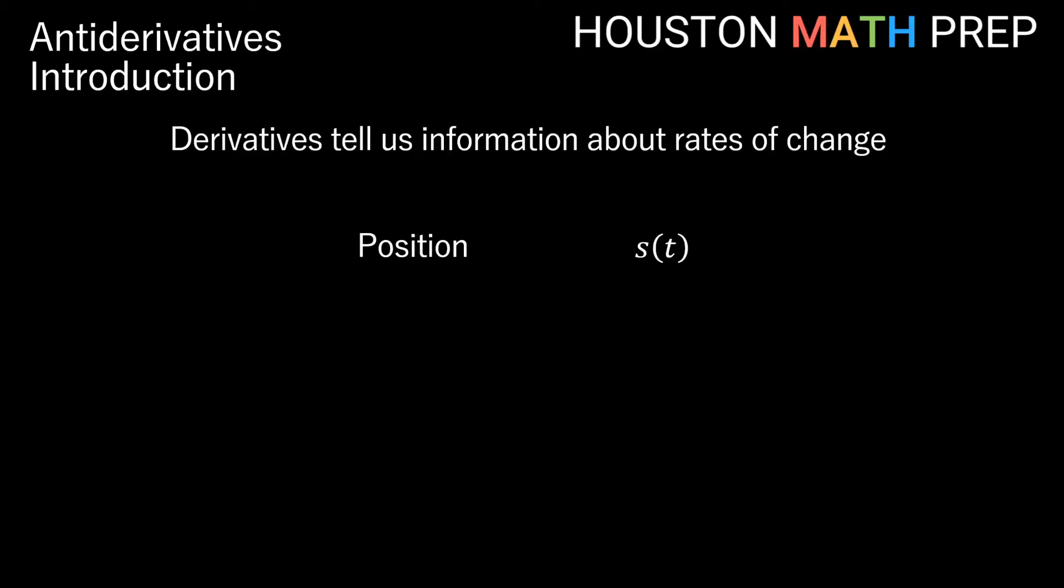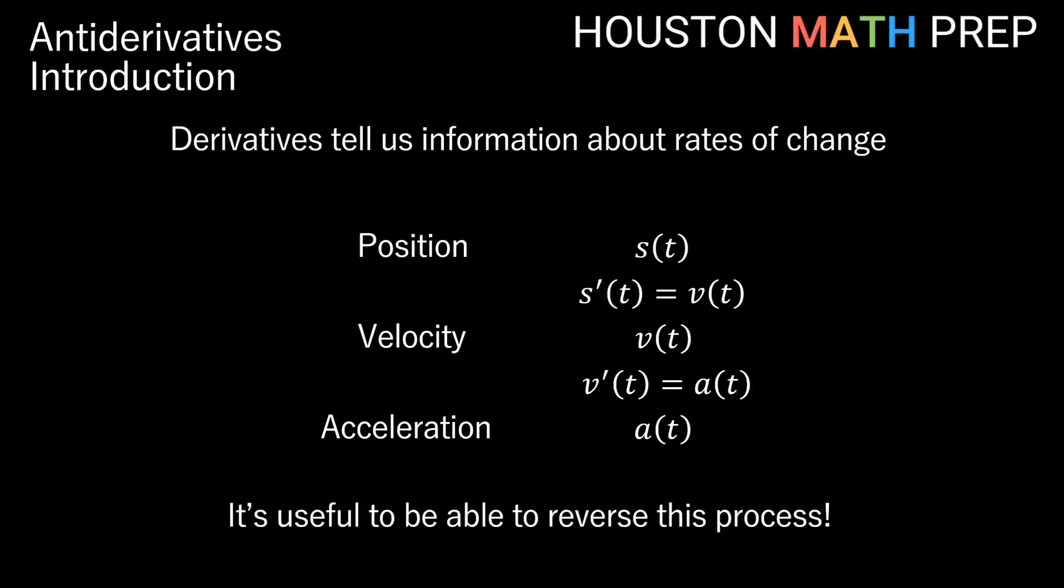So for example, if we start with some position function s of t, and we take the derivative of the position function, that gives us what we usually call v of t, which is our velocity function. We could again then take the derivative of our velocity function, so that would be v prime of t. We usually call that a of t, and that's our acceleration function.